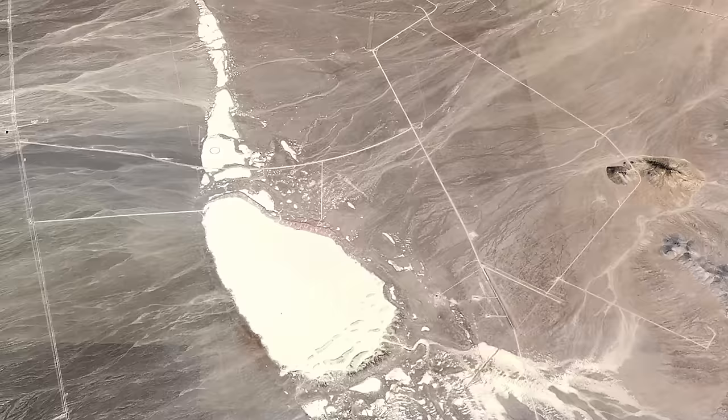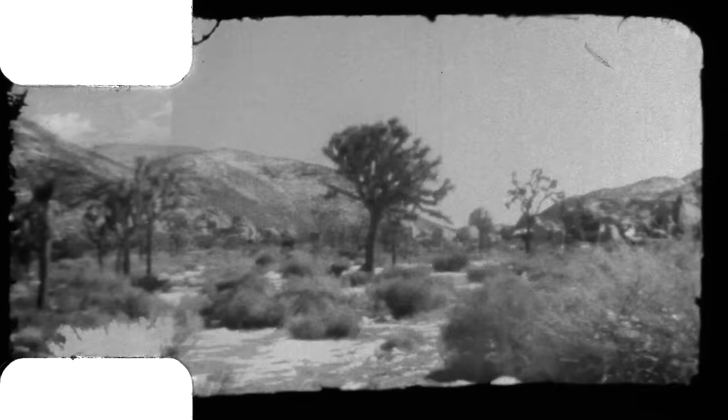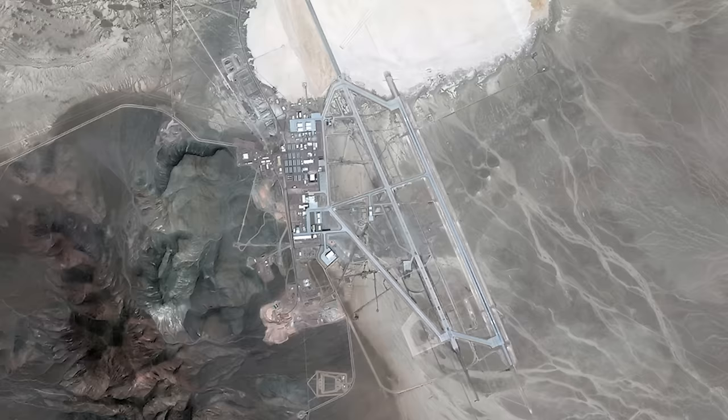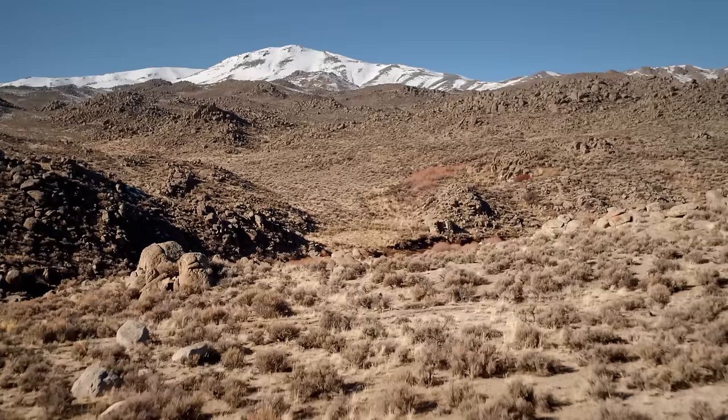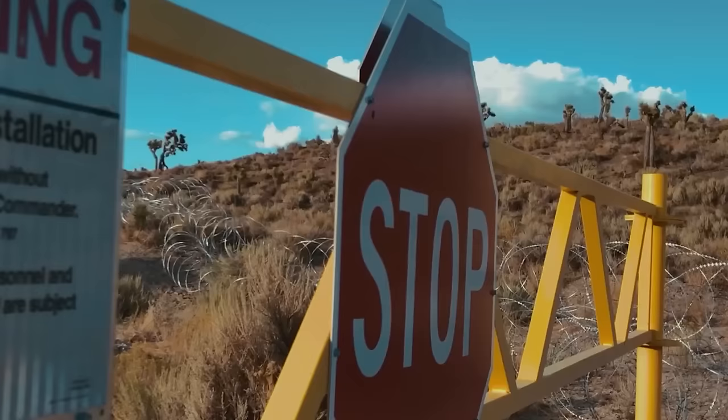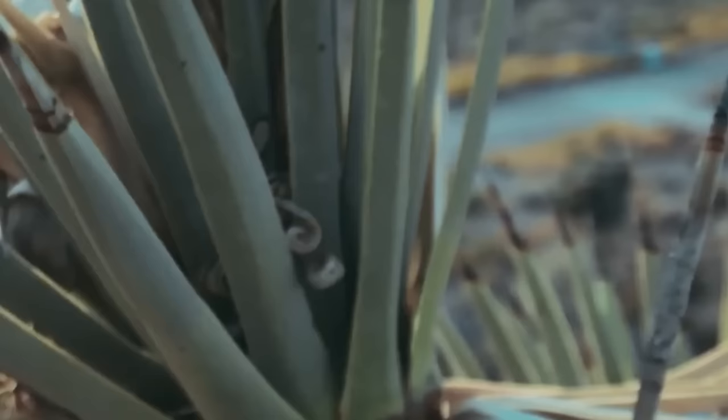Lazar claims he was whisked away to work at a site known as S4, a place so shrouded in mystery it could easily be mistaken for a mirage in the Nevada desert, just a stone's throw from the infamous Area 51. According to him, S4 was ingeniously camouflaged against the desert backdrop, designed to be invisible to the untrained eye and to keep prying eyes at bay.